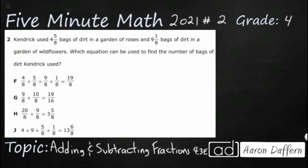So Kendrick is going to make a little garden here and he's going to use some dirt to make his garden a little bit more beautiful. And we see we've got two measurements here. It's four and five-eighths, a mixed number. And then we've also got nine and one-eighths, another mixed number. And so those two mixed numbers, we need to find the equation that's going to be used to find how much he used all together.